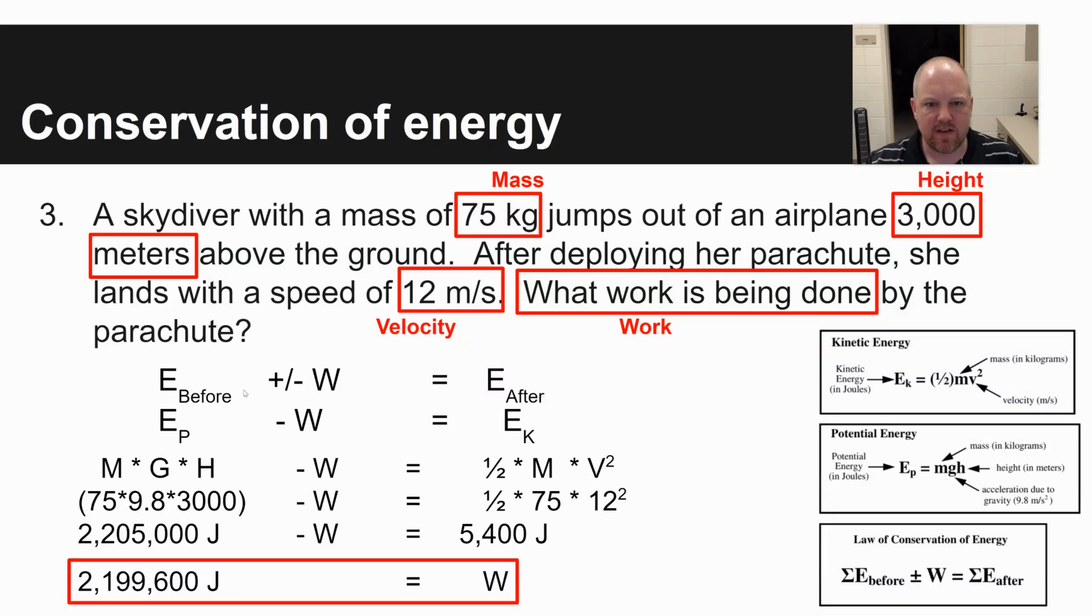And so 75 is your mass times 9.8 is gravity, acceleration to gravity, times 3,000, which is your height. Mass times gravity times height is going to give you a potential energy before of 2,205,000 joules. Your energy afterwards is one-half times mass times velocity squared, so one-half times 75. You have the same mass before you land, times velocity 12 squared gives you 5,400 joules afterwards.